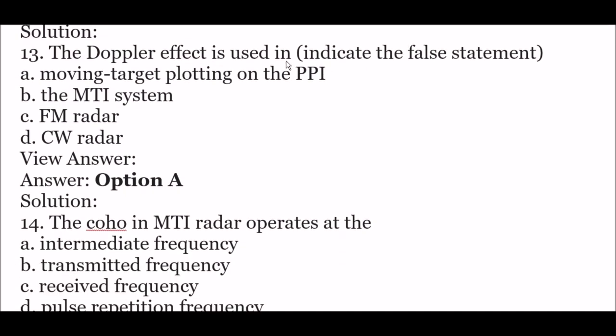Next question: the Doppler effect is used in — indicate the false statement. Option A: moving target plotting on the PPI, option B: the MTI system, option C: FM radar, option D: CW radar. The right answer is option A — moving target plotting on the PPI is the false statement. The Doppler effect is not used in moving target plotting on the PPI.